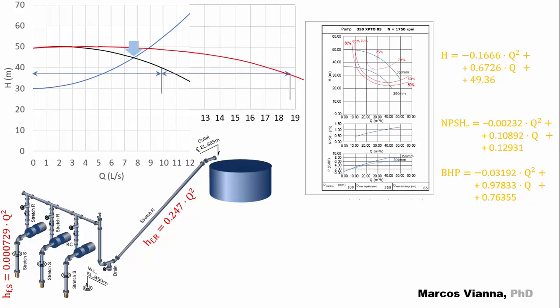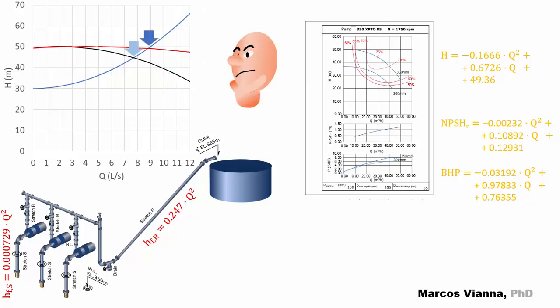Now we see another curve, the red one, which represents the parallel combination of two pumps. Notice that for each head, the flow doubles. But this will be the operating point when two pumps are working in parallel. The flow won't double, because the head losses in the system are now greater than before.